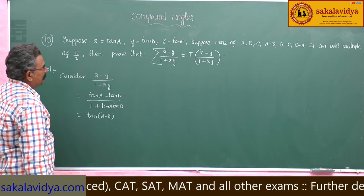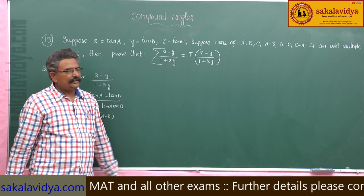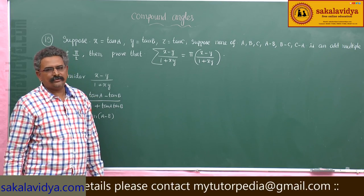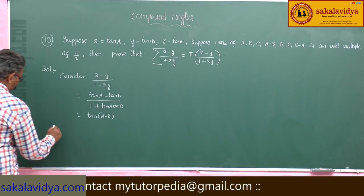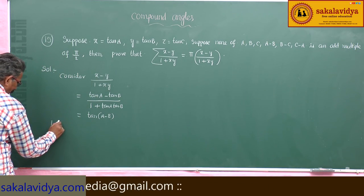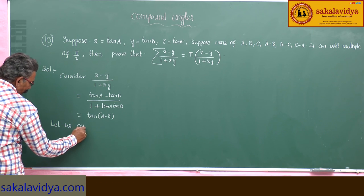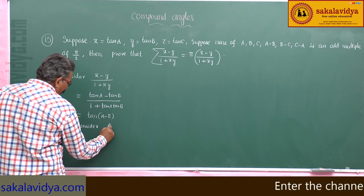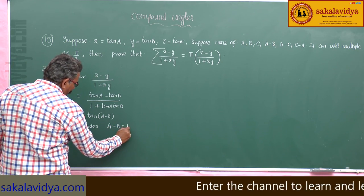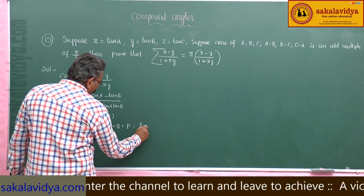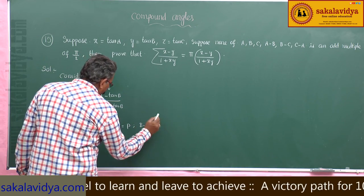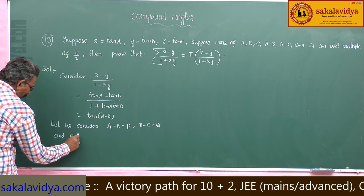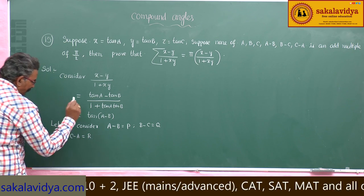So that means indirectly, sigma tan of (a minus b) is equal to pi of tan of (a minus b) has to be shown. For that, let us consider a minus b equals p, b minus c equal to q, and c minus a is equal to r, cyclically.